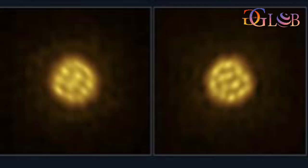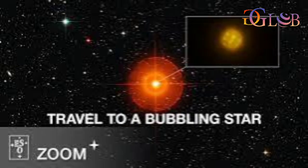The team obtained images of the surface of R Doradus over the course of a month. R Doradus is a red giant star with a diameter roughly 350 times that of the sun, located about 180 light years away from Earth.